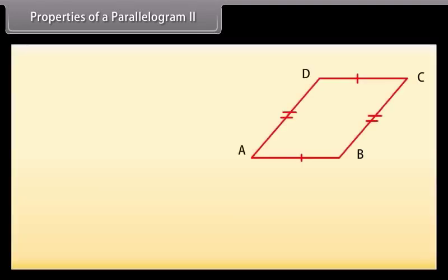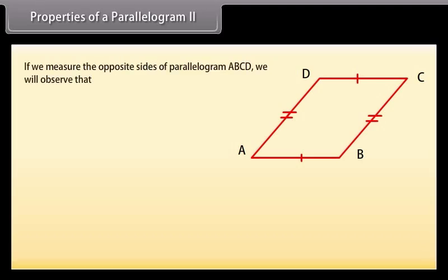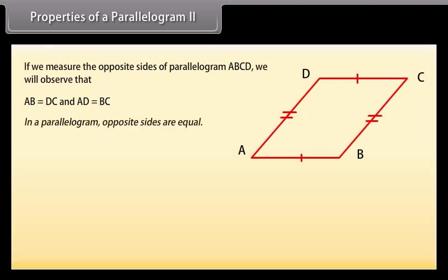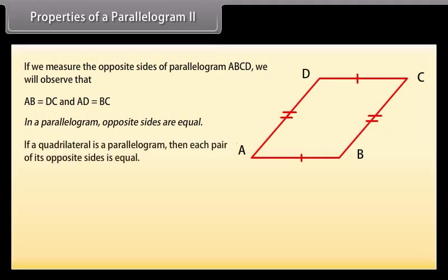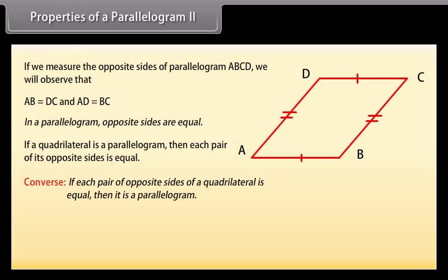Properties of a parallelogram 2: We know that a diagonal divides the parallelogram into two congruent triangles. If we measure the opposite sides of parallelogram ABCD, we observe that AB = DC and AD = BC, which is another property of a parallelogram. It says that in a parallelogram, opposite sides are equal. This theorem can also be stated as: if a quadrilateral is a parallelogram, then each pair of its opposite sides is equal.